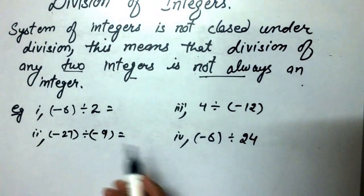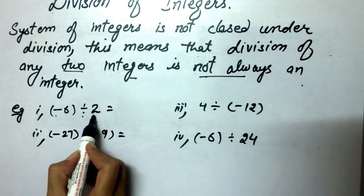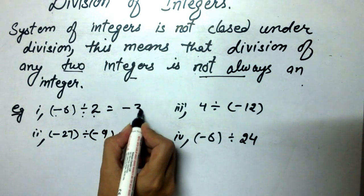To understand this, let's have a few examples. Minus 6 divided by 2 is equal to minus 3.